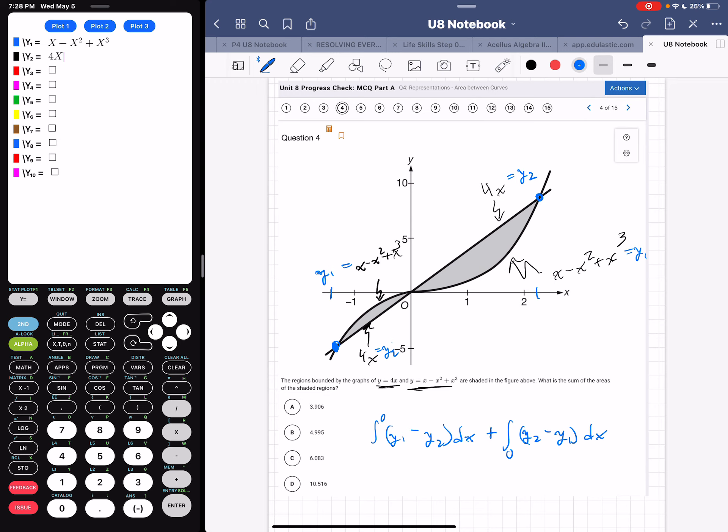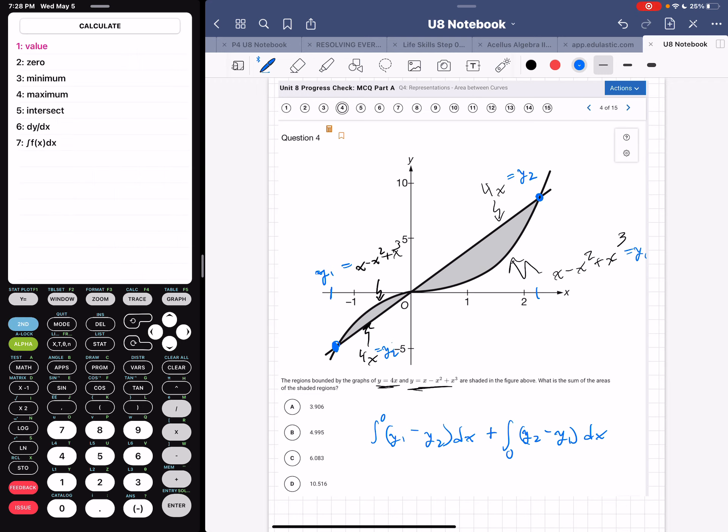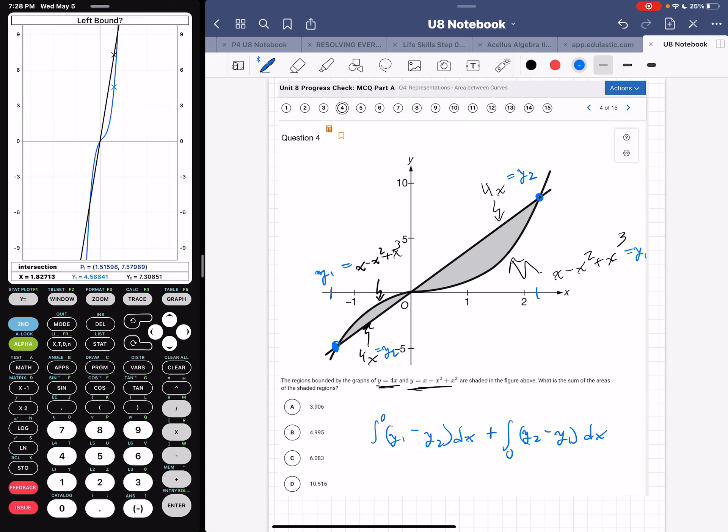Luckily, we have our graphing calculator. Going to the graph, I'm going to hit second calc, which is the trace button, to find my tool, the intersect tool. So I press 5. My graphing calculator has me choose a left bound and a right bound. And then my job here is to try to pick a left bound and a right bound that surround the point of intersection that I'm looking for.